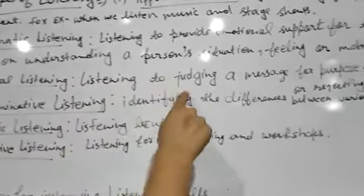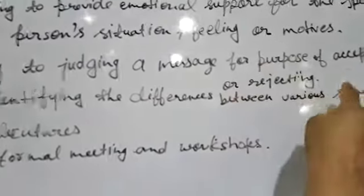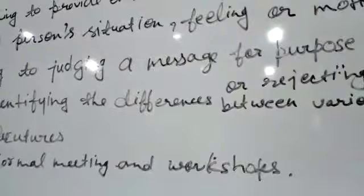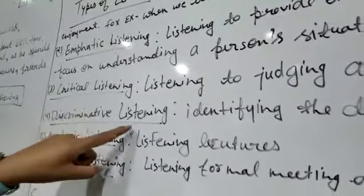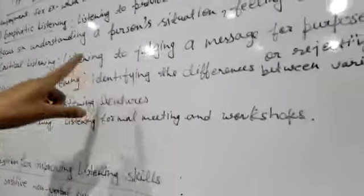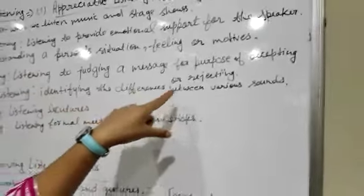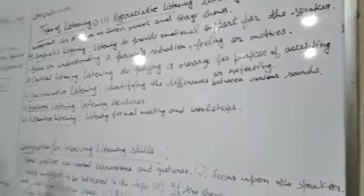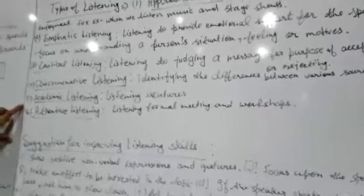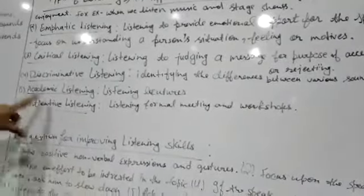In critical listening, listening to judge a message for the purpose of accepting or rejecting. Discriminative listening is identifying the differences between various sounds. Fifth type of listening is academic listening.